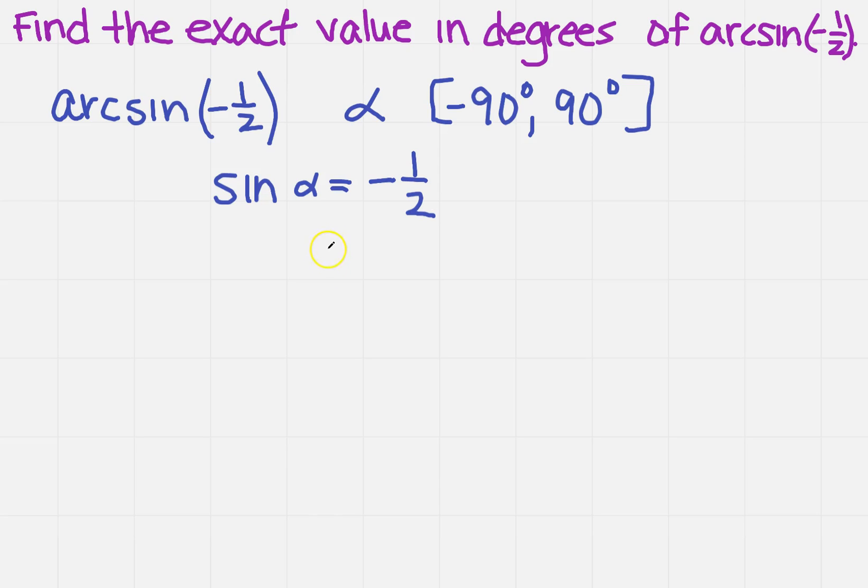Well, α would equal -30°. So what does that mean? I need to rewrite it in the form of arcsine. So arcsin(-1/2) = -30°.